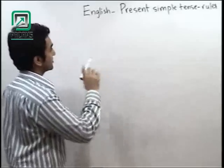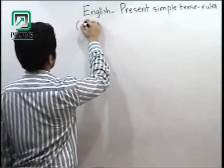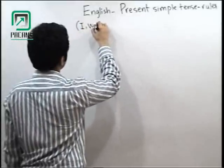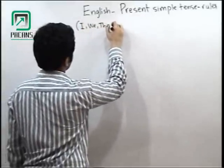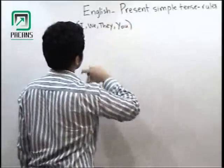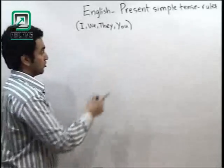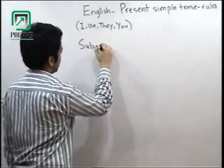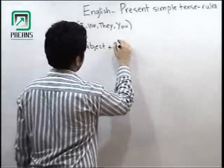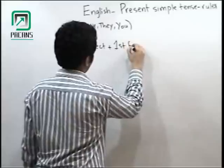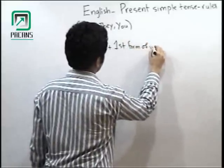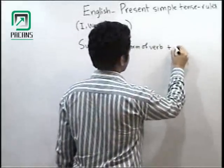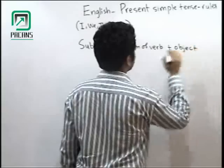If your subject is I, we, they, or you, your sequence will be subject plus first form of verb plus object.